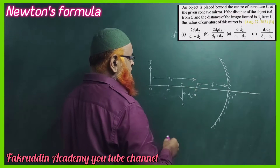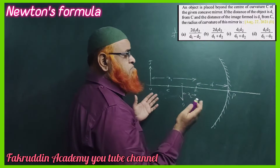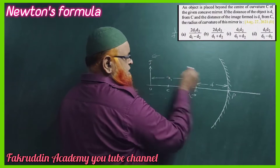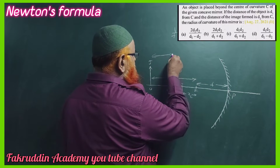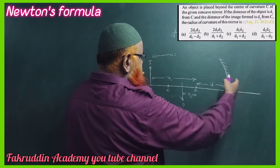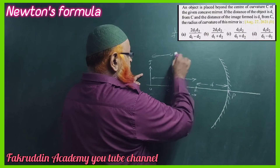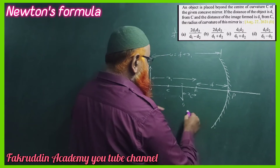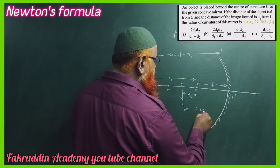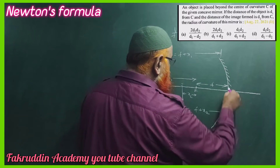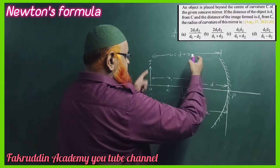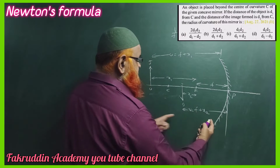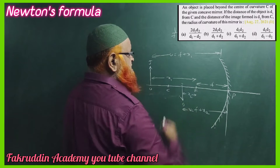In this case, what is going to be u and what is going to be v? The distance of the object from the pole is taken as u, and this total distance is considered as f plus x1. From the image, the total distance is taken as f plus x2. So v is f plus x2 and u is f plus x1.